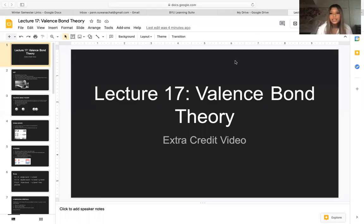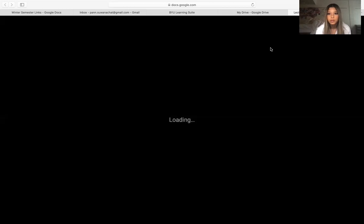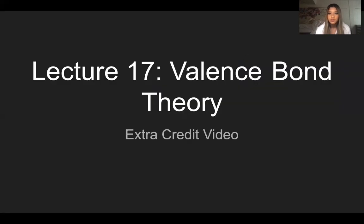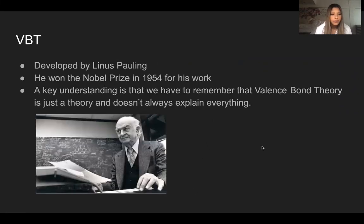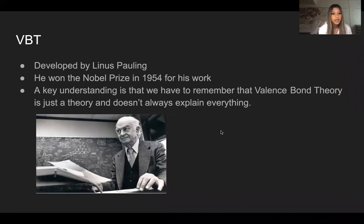Hi, my name is Ponsuwanichat and I'm doing my extra credit video on Lecture 17 of Valence-Bond Theory. The Valence-Bond Theory was developed by Linus Pauling. He actually won the Nobel Prize in 1954 for his work. A key understanding is that Valence-Bond Theory is just a theory and it doesn't always explain everything. Later on we'll learn about all the other theories.